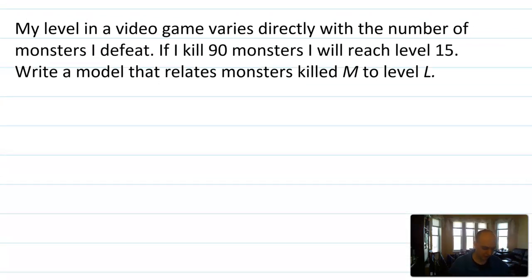Let's do an example problem involving direct variation. Let's say that my level in a video game varies directly with the number of monsters that I defeat. And I played the game enough to know that if I killed 90 monsters, I reached level 15. Write a model that relates the monsters killed M to my level L. So if it varies directly, then I know that my level depends on some constant times the number of monsters I kill. So that's the base setup for this proportion. Then let's plug in the numbers. If I said I killed 90 monsters, I would reach level 15.